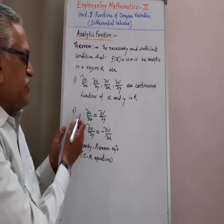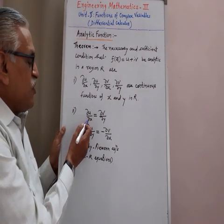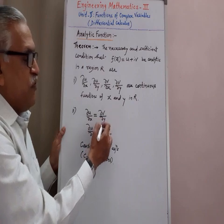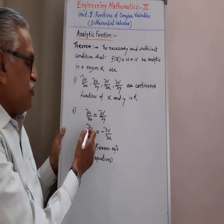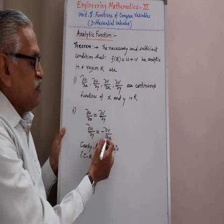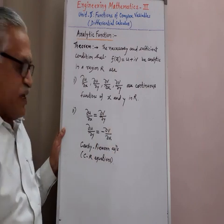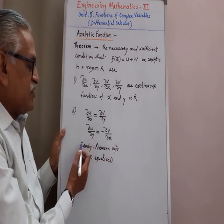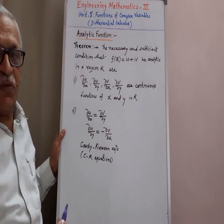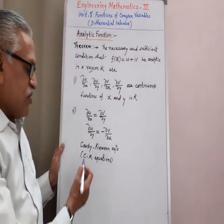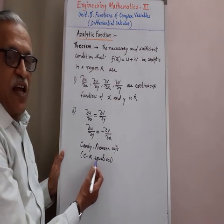Second condition: ∂u/∂x equals ∂v/∂y and ∂u/∂y equals minus ∂v/∂x. These conditions are known as Cauchy-Riemann equations, or in short we are calling it as CR equations.